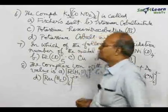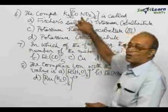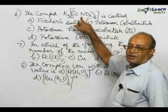Now, let us see Fischer's salt. This compound is known as Fischer's salt. So the compound K3Co(NO2)6 is called Fischer's salt - it is correct. A is correct.